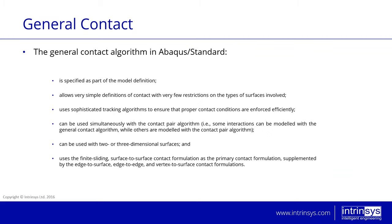Some additional things about the general contact algorithm in Abacus Standard: it's specified as part of the model definition, meaning it propagates through the different steps of the analysis. It allows very simple definitions of contact with very few restrictions on the types of surfaces involved. It uses sophisticated tracking algorithms to ensure proper contact conditions are enforced efficiently, and can be used simultaneously with the contact pair algorithm. You can define a general contact and include specific contact pairs with different contact properties, which will be automatically excluded from the general contact definition. It can be used with two or three-dimensional surfaces and uses the finite sliding surface-to-surface contact formulation as the primary contact formulation.